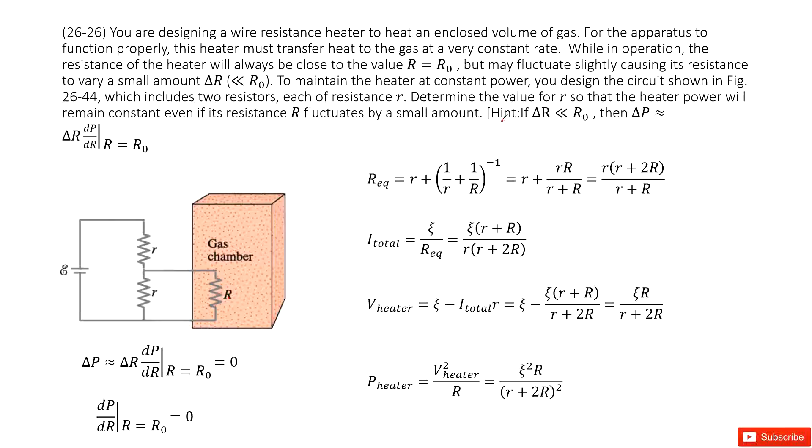And then look at the hint. This is the most important part. If delta R is much smaller than R₀, then delta P equals this part. So that means if we want to make sure the power remains constant, that means we need to make delta P equal to zero. And delta P equal to zero, as we see R may change a small amount. That means delta R is not equal to zero.